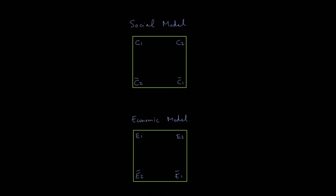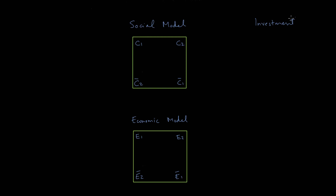These three squares are the social model, the economic model, and some individual values as well. As we add terms to these models, what we're doing is providing a kind of investment — and this is not an economic term, so we're not investing in the stock market. It's almost more like clothing the model, the square, with different things. So we're going to add some terms to the square.